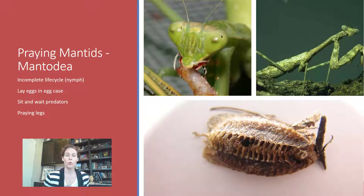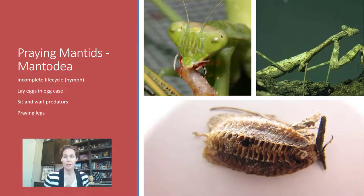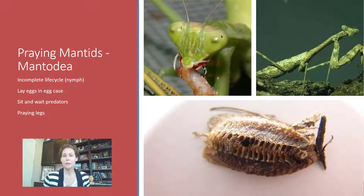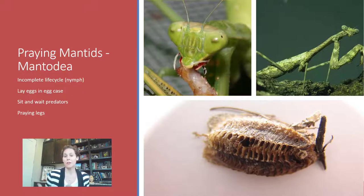Praying mantids are in the order Mantodea. They have a triangular-shaped head with big eyes — very different from a walking stick. They have an incomplete life cycle, and their babies are called nymphs. Being terrestrial, they lay their eggs in egg cases called oothecae, which release about 30 tiny praying mantis nymphs. These are sit-and-wait predators — they don't hunt for food but instead hunker down and wait until prey comes in front of them.